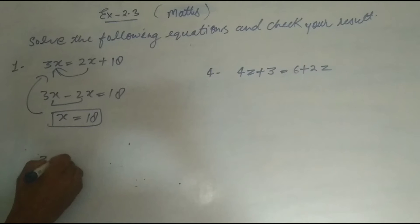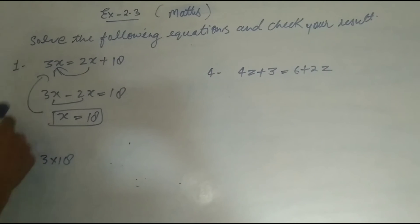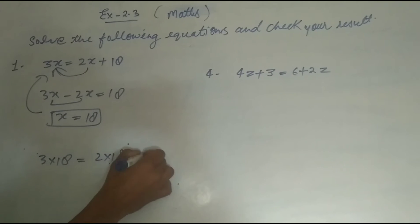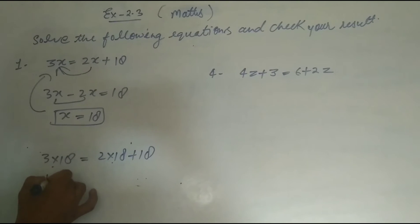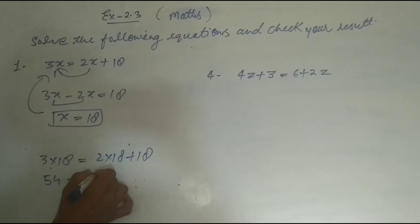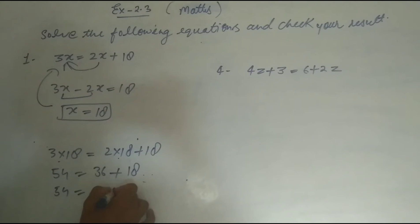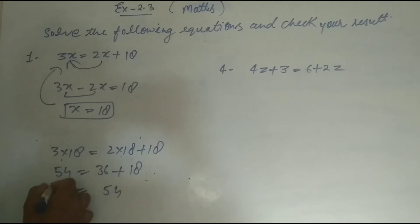3x = 3 × 18. We put the value of x in the LHS equation. 2 × 18 + 18. 3 × 18 is 54. 2 × 18 is 36 plus 18. Now we add: 36 + 18 = 54. So 54 = 54.